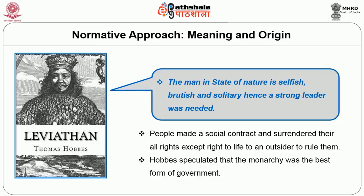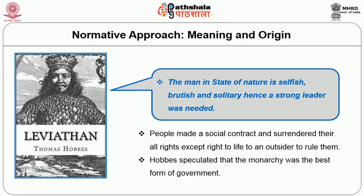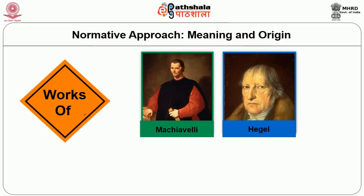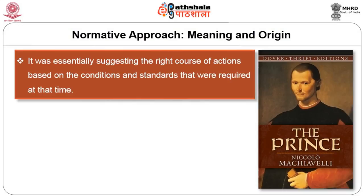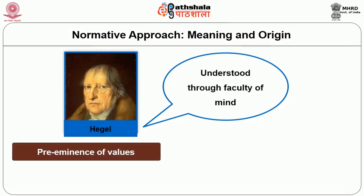However, John Locke and Rousseau presented a little break away from what Hobbes said in his theory. Works of Machiavelli and Frederick Engels were too based on normative understanding. The Prince of Machiavelli essentially suggested the right course of action based on the conditions and standards required at that time. The Geist of Hegel was an idea that could only be understood through the faculty of mind. The pre-eminence of values like good, virtue, right or wrong dominates the normative theories.